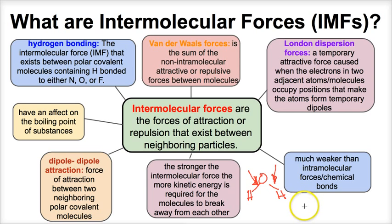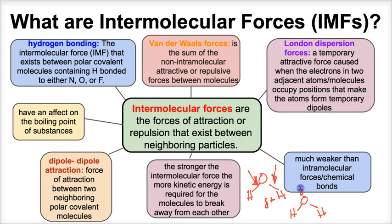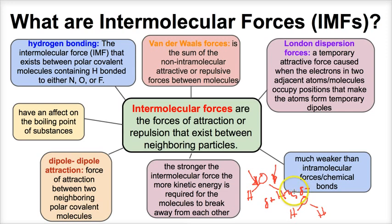But what are intermolecular forces, or IMFs for short? Well, let's suppose we have another water molecule next to this existing water molecule. From the last video, we learned that one end of the water molecule has a partial positive charge and the oxygen end has a partial negative charge. When you get two water molecules next to each other, this partial negative and this partial positive are going to attract each other. They're not going to chemically bond, but there's going to be a force of attraction that holds these water molecules together. That's because of the hydrogen bonding that occurs between these two water molecules. Hydrogen bonding is a type of intermolecular force — the forces of attraction or repulsion that exist between neighboring particles.